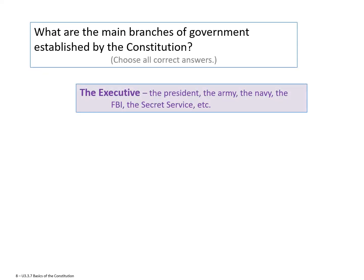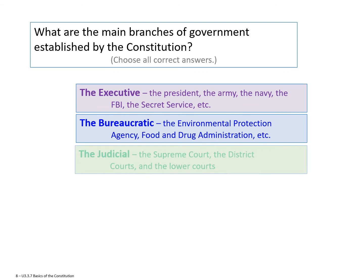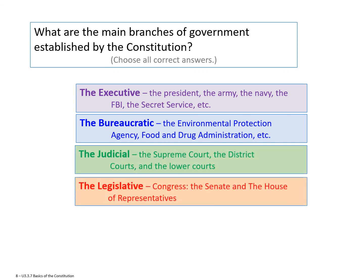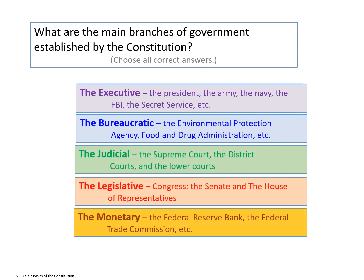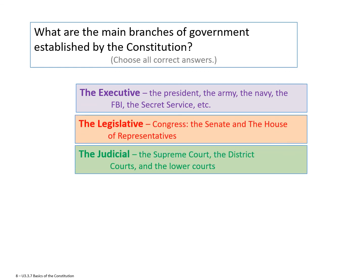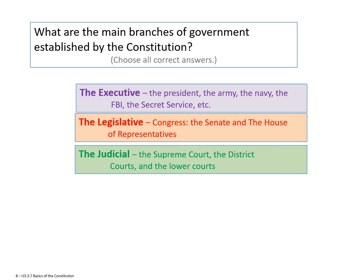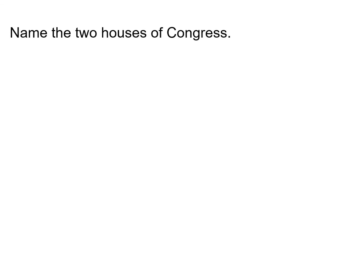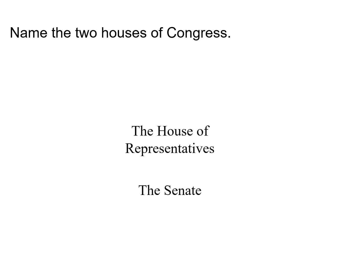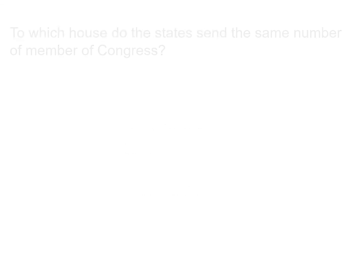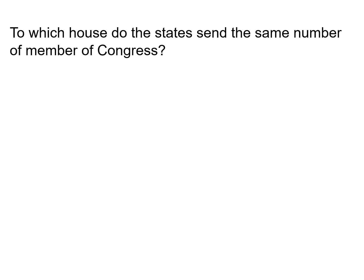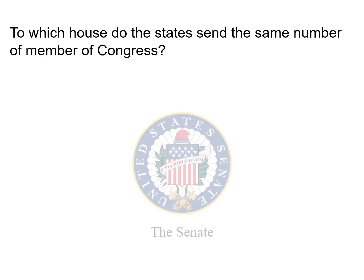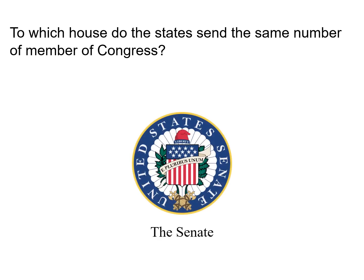Which are the three main branches of the government as established by the Constitution? The Executive, the Legislature, and the Judicial. Name the two Houses of Congress: the House of Representatives and the Senate. To which House do the states send the same number of members? The Senate — each state gets two.